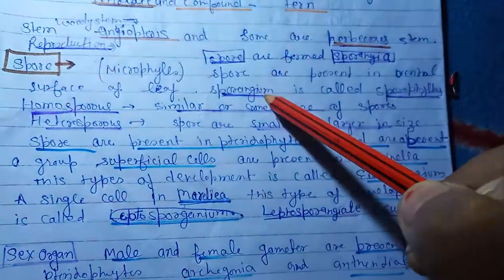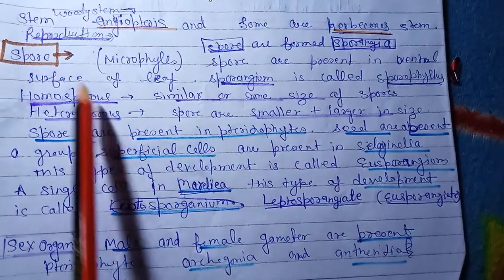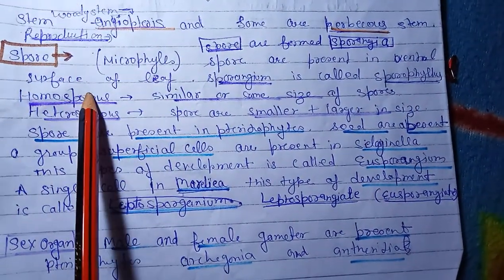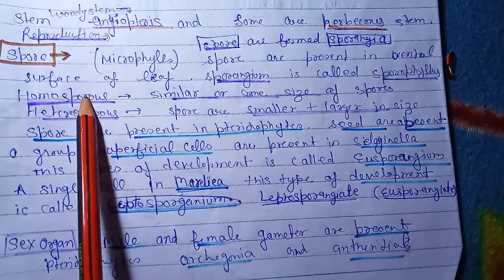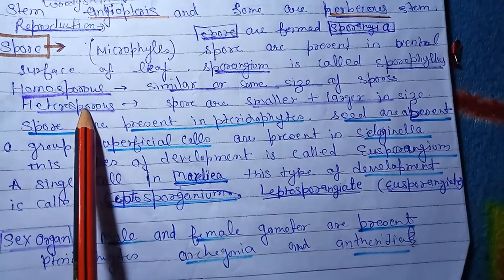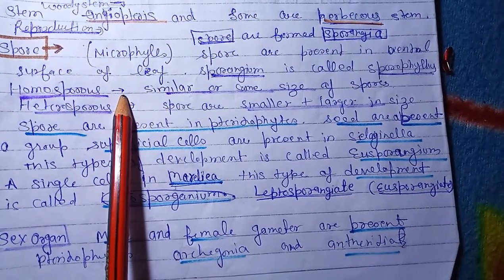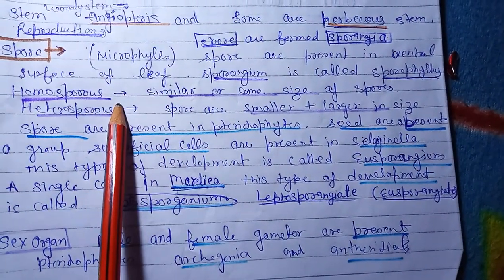Sporangium is called sporophyllus. Homosporous and heterosporous - homosporous means similar size of spores are present, and heterosporous means one is smaller and one is larger. Spores are present on one leaf outer surface.